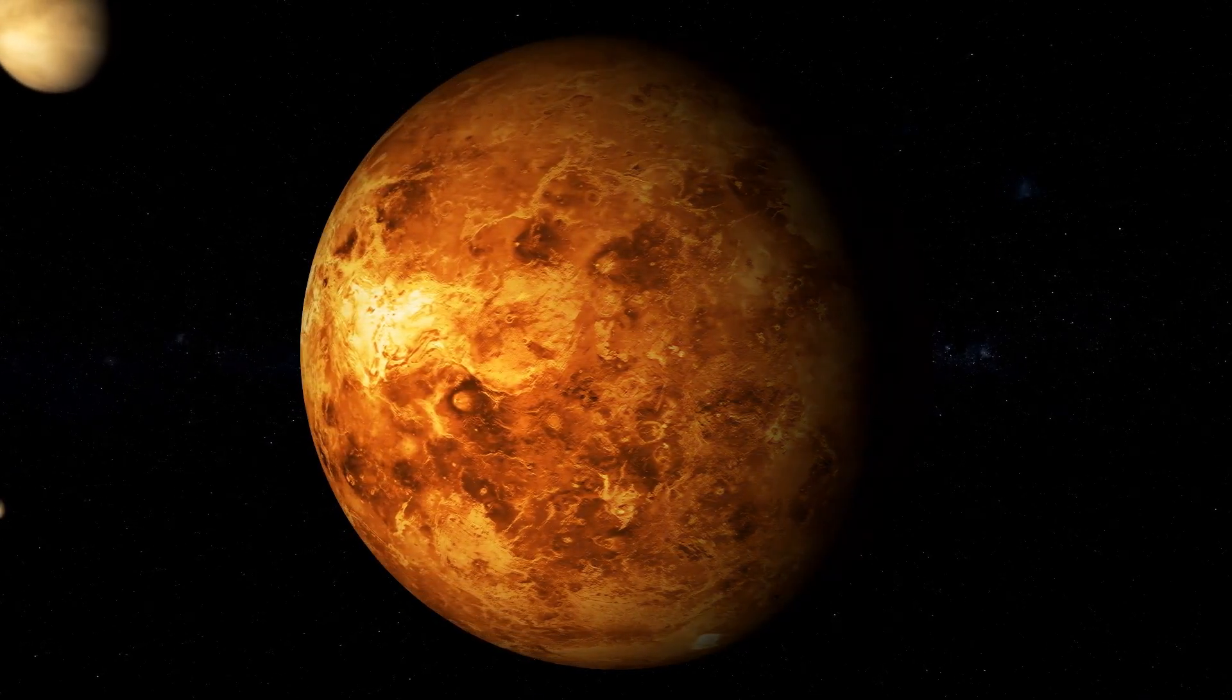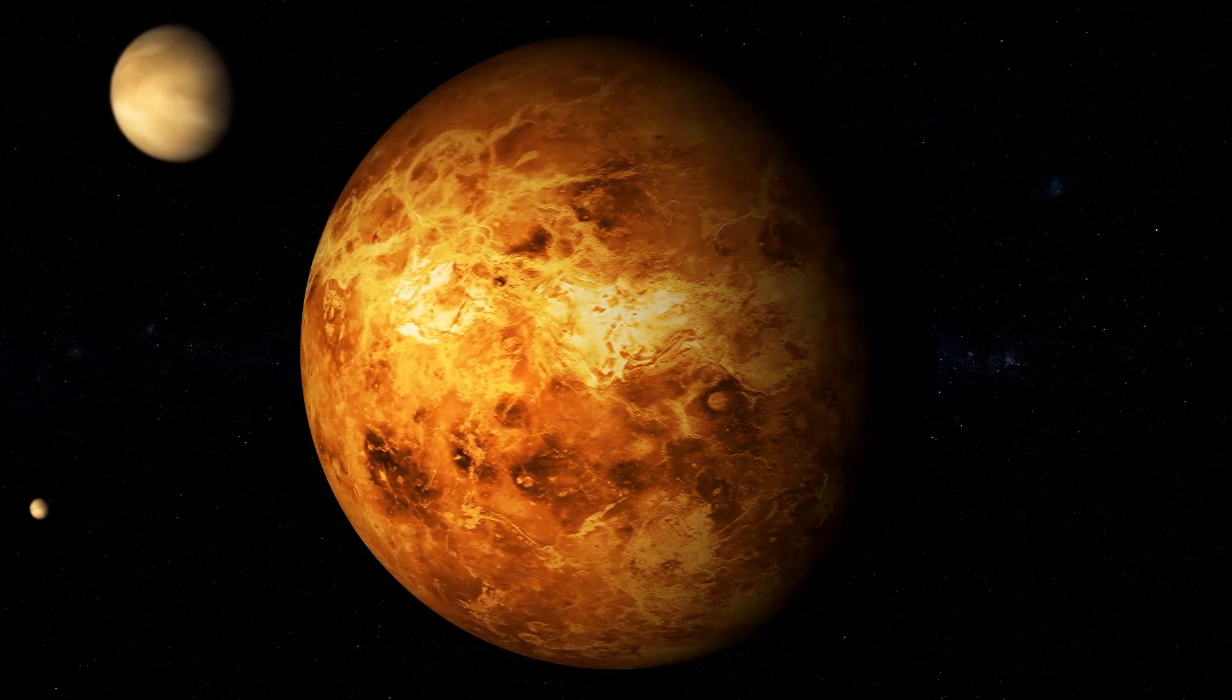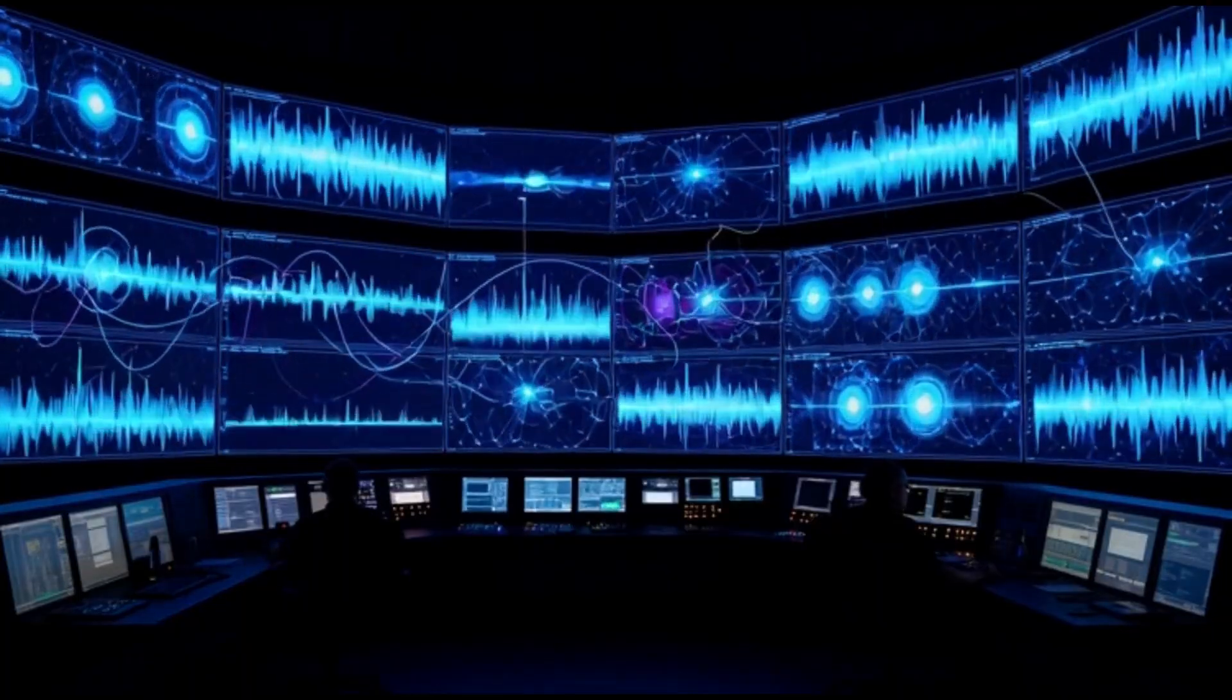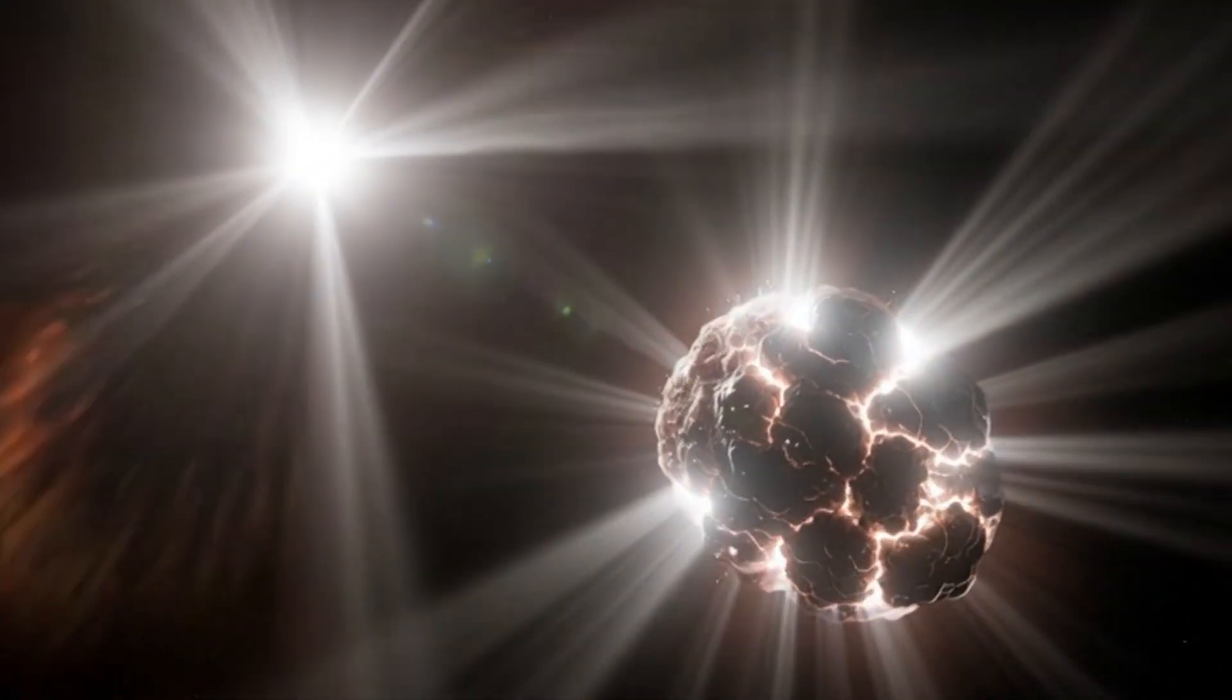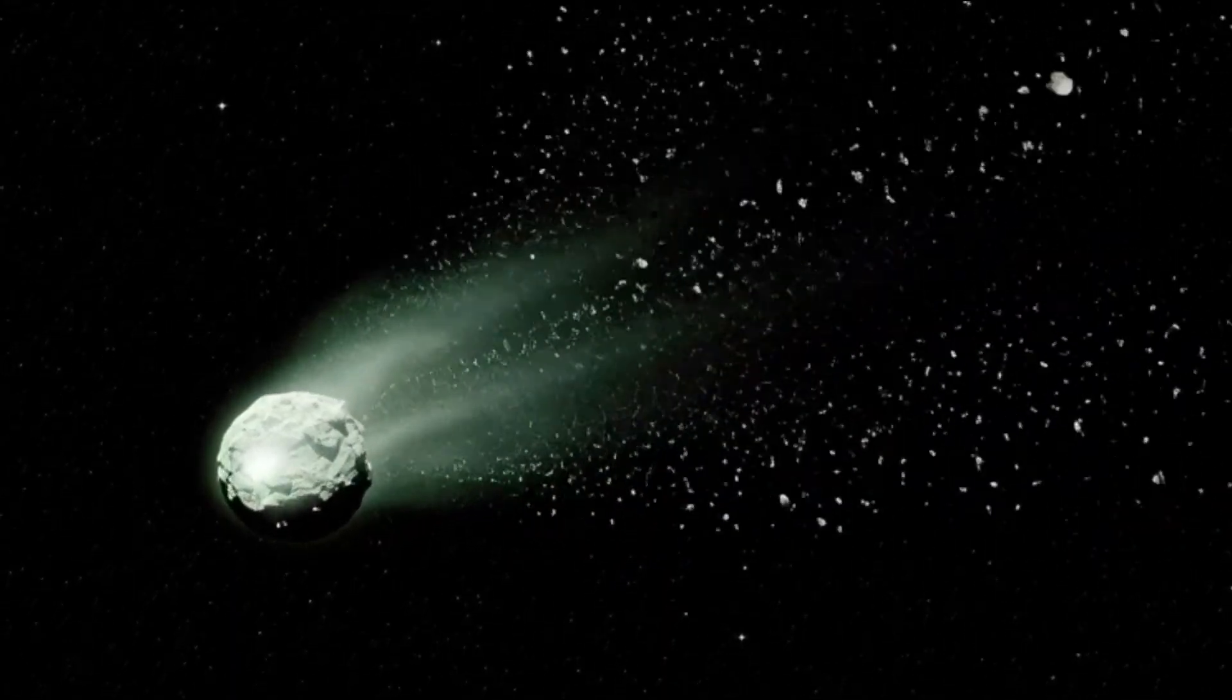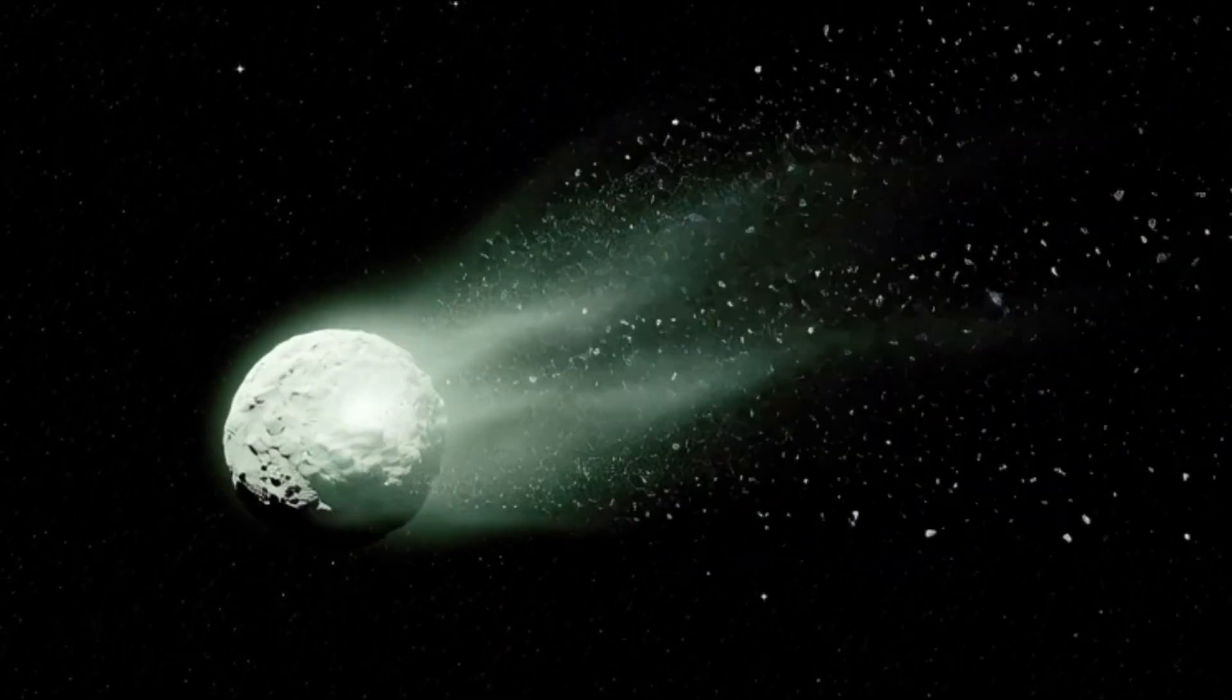As the comet rounded the sun, its brightness exploded, skyrocketing far beyond predictions. In ultraviolet and blue filters, it suddenly shifted color, going bluer, brighter, and sharper. That shift usually means one thing. Fresh, fine, icy grains blasted into space, like something inside the comet cracked wide open.